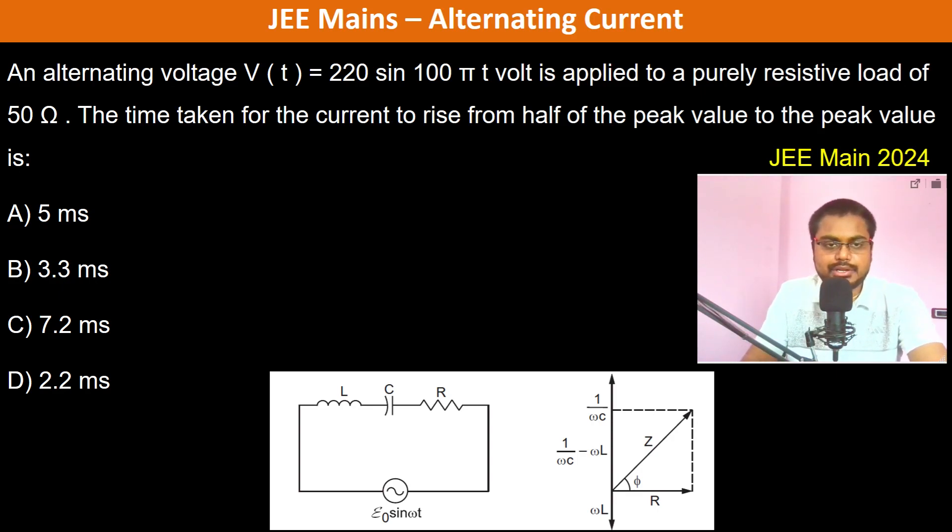An alternating voltage V = 220 sin(100πt) volt is applied to a purely resistive load of 50 ohms. The time taken for the current to rise from half of the peak value to the peak value is: